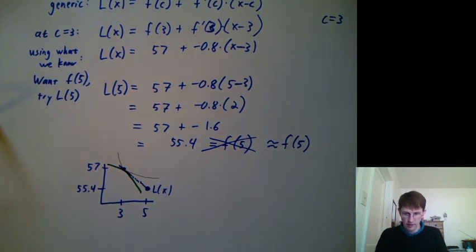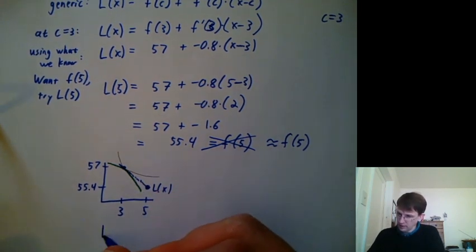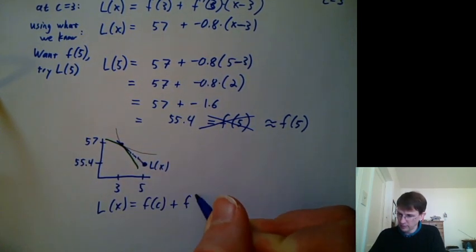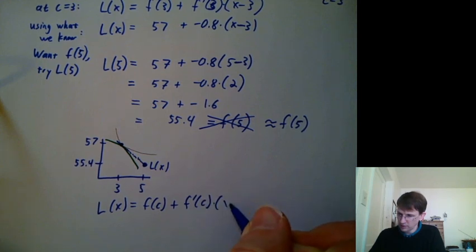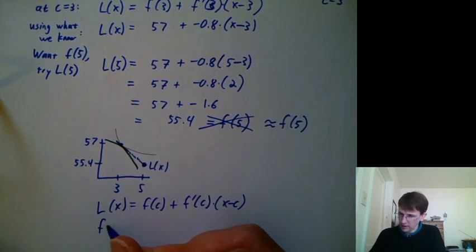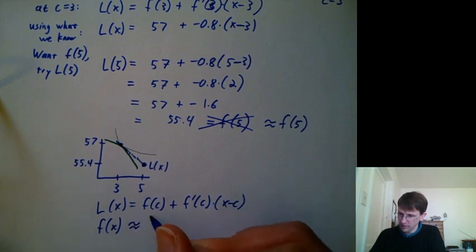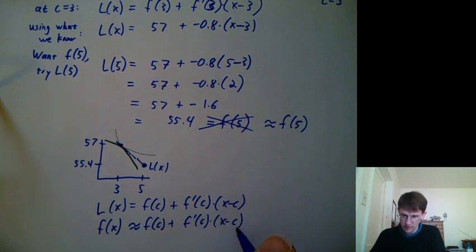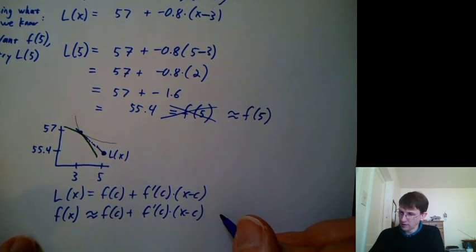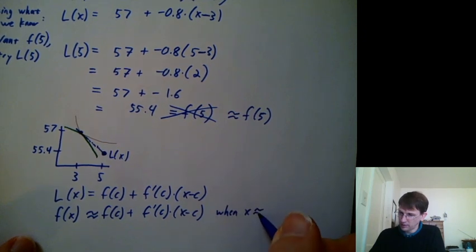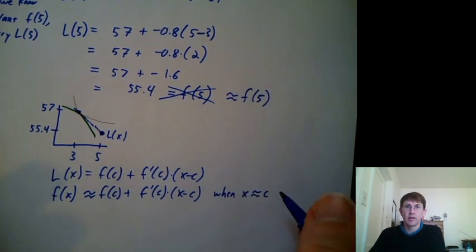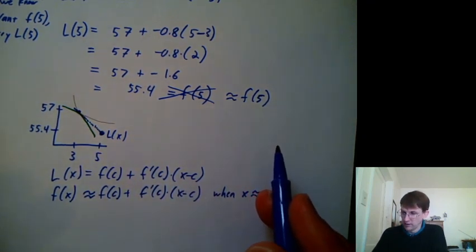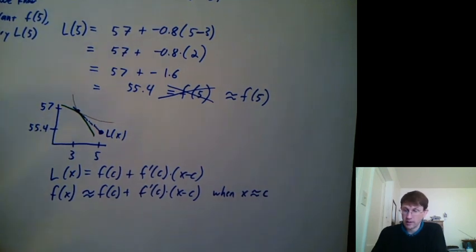So we could say L of x equals f of c plus f prime of c times x minus c. And we can also say f of x is approximately f of c plus f prime of c times x minus c. And the approximation is better and better when x is roughly equal to c. If we were trying to extend this out from 3 to like 300, I wouldn't really trust the tangent line much at all. But it would still be the best thing I could do, given the information that I had.